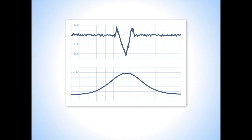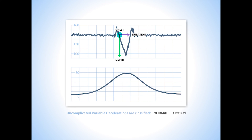When variable decelerations are associated with uterine contractions, their onset, depth, and duration commonly vary with successive uterine contractions. When uncomplicated variable decelerations occur occasionally, the tracing is classified as normal. If they are repetitive — three in a row — the tracing is classified as atypical.